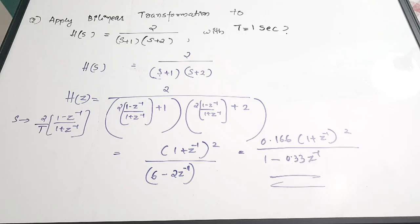I hope you understood the concept of bilinear transformation — why it is done and what is done in it. We have also done a video on the impulse invariance method. In DSP, these are the two most common ways of converting analog filters to digital filters. If you found this helpful, please give it a thumbs up, share it with your friends, subscribe to the channel, and thanks for watching.